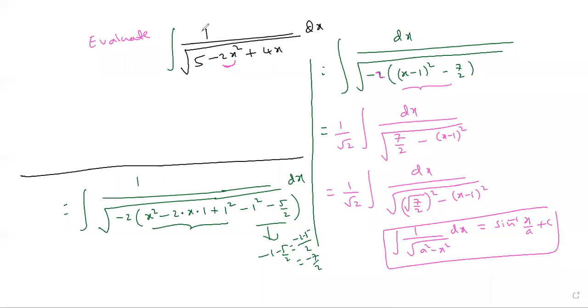One or two questions with this approach and you can solve any type. So 1/√2 outside. Now the root changes into sin⁻¹(x/a). x is (x - 1), and a is √(7/2). (x - 1) by 7.